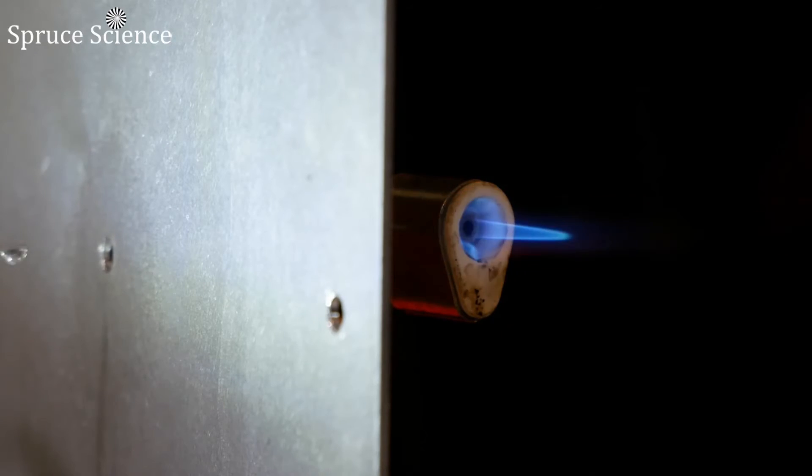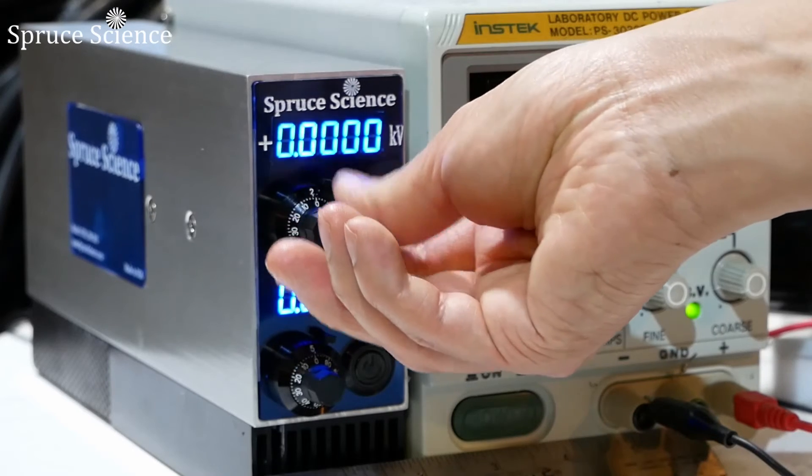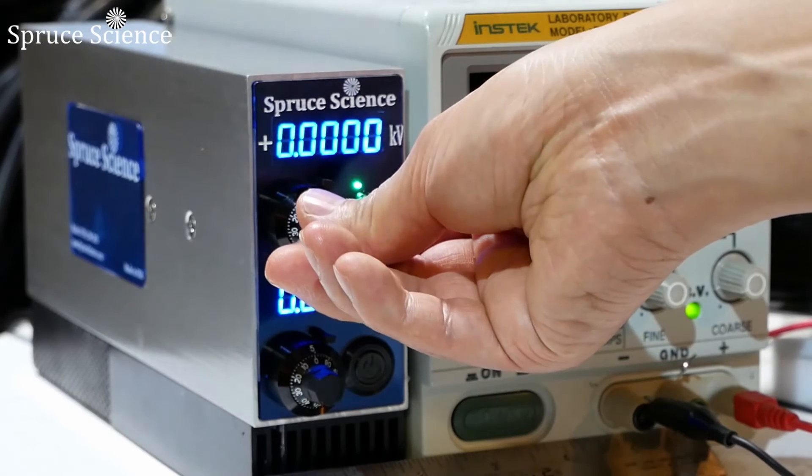Fortunately, the desktop high voltage power supply I'm using is adjustable, so I will ramp the voltage using the dial indicator to see the effects. High voltage settings will be displayed on the screen.